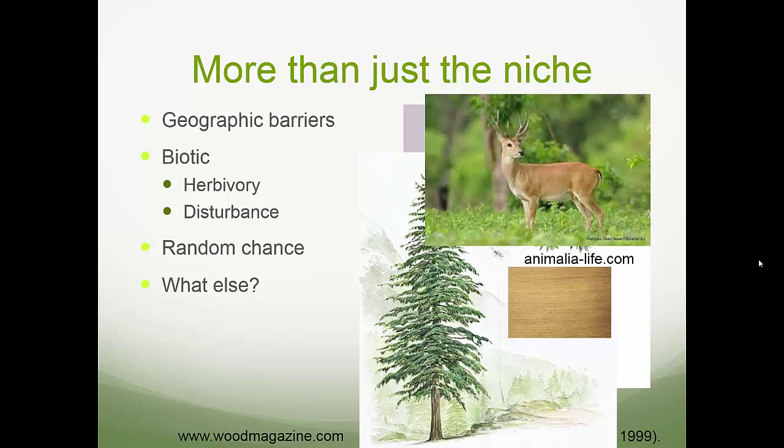It's important when we think about tree species distribution to think about the abiotic factors — what's the climate like, what is the species adapted to — but we also have to think about the other factors that are influencing distribution. What else might influence a tree species' distribution? What else can really impact where you see something or don't?